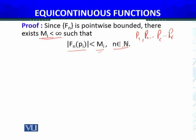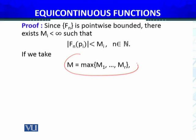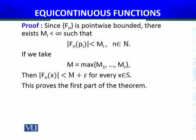If we take M equal to the maximum of all these Mi, for i = 1 up to the finite number of points, then |fn(x)| < M + epsilon for every x belonging to S. Since M does not depend on any particular point, this holds uniformly.